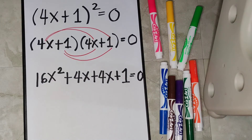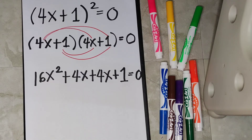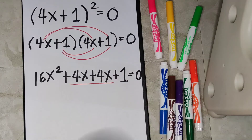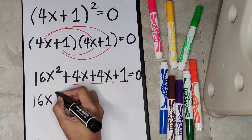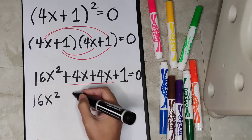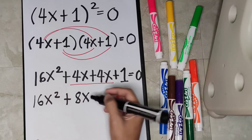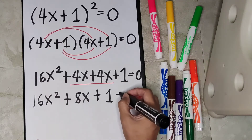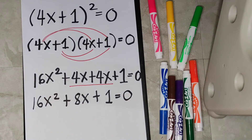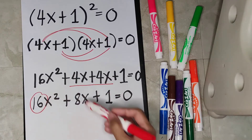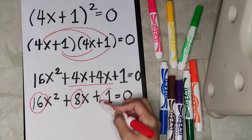We can now simplify this by combining similar terms. 4x times 4x is 16x squared. 4x times 1 is 4x, and 1 times 4x is also 4x. Our last term is 1 times 1 is 1. So combining the similar terms 4x and 4x gives us 8x. Therefore, our equation is 16x squared plus 8x plus 1 is equal to 0, which is a quadratic equation where the value of a is 16, the value of b is 8, and the value of c is 1.